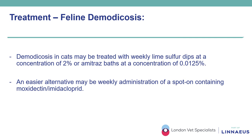For feline cases, patients can be treated with weekly lime sulfur dips at 2% concentration or amitraz baths at 0.0125% concentration. An easier alternative can be weekly administration of a spot-on containing moxidectin and imidacloprid.